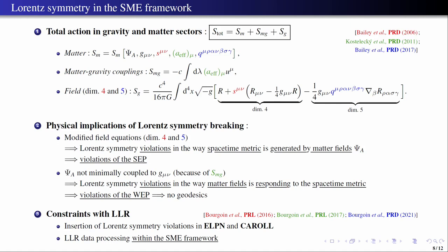If you look for instance at the term of dimension four and five here, which are the red and the blue, they are leading to Lorentz violation in the way the spacetime metric is going to generate, the matter field is generated by the matter field theory. And in that case you would have some violation of the strong equivalence principle, and this is going to polarize the orbit of the moon because of some what we call the gravity-matter coupling terms. Here the matter field actually is not now minimally coupled with the metric, the spacetime metric. And in that case you would introduce violation in the way the matter field is responding to the spacetime metric. And in that case you would have violation of the weak equivalence principle, meaning that the objects are not following geodesics of spacetime anymore.